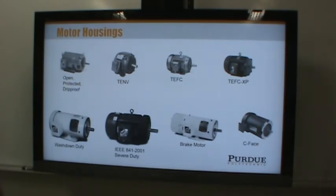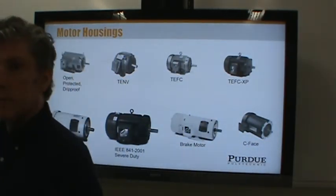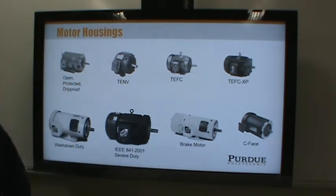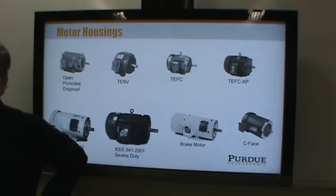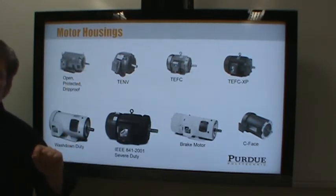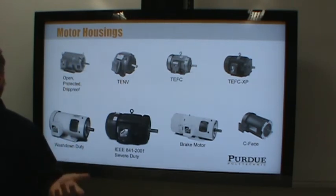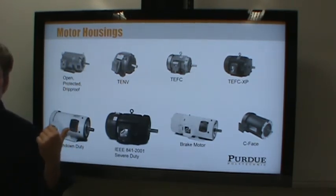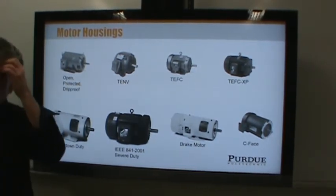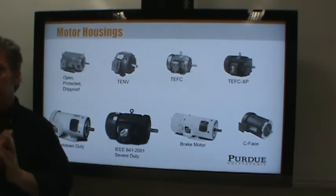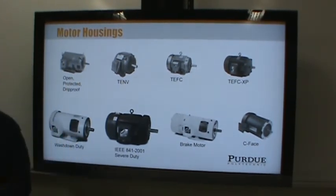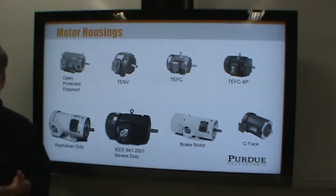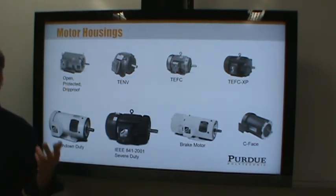A student mentioned that many brake motors they've used are electromagnetically activated, and that there are scenarios where applying current engages the brake and scenarios where disconnecting current engages the brake. This gets into the safety question of whether you want the motor to coast down or stop immediately when power fails. There are many brake types available — friction brakes and eddy current brakes are just two options.